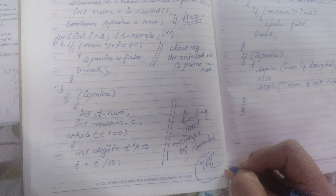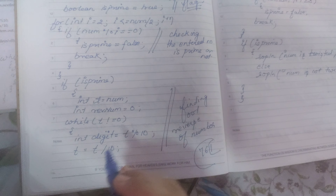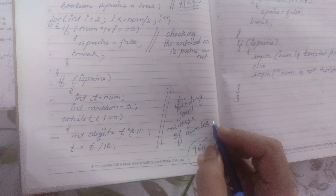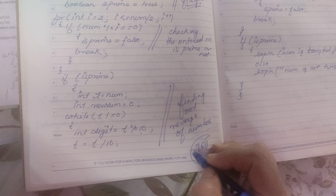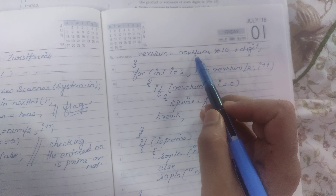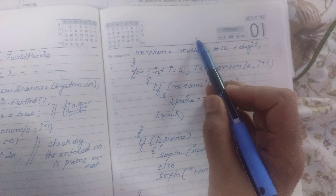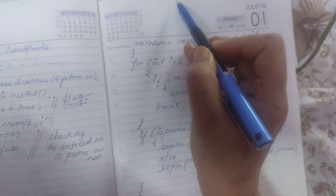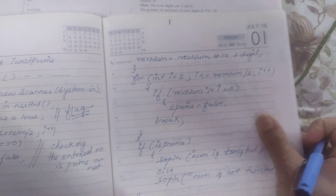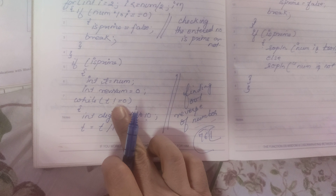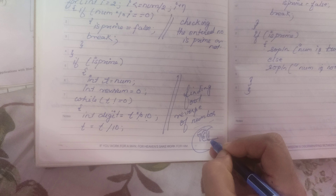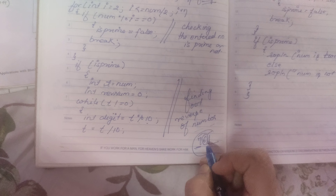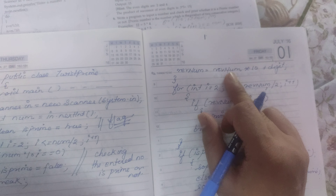If isPrime is true, we take an integer t as a temporary variable to store the original number — suppose 761 is the original number. Then reverseNumber is initialized to 0. We continue while t is not equals to 0. We take the digit using: digit equals to t mod 10, which gives the remainder. Then t equals to t divide 10, so now 76 is in t and 1 is stored in digit.